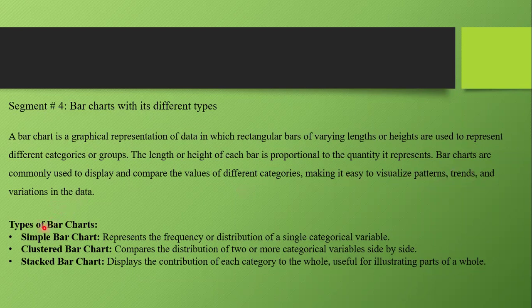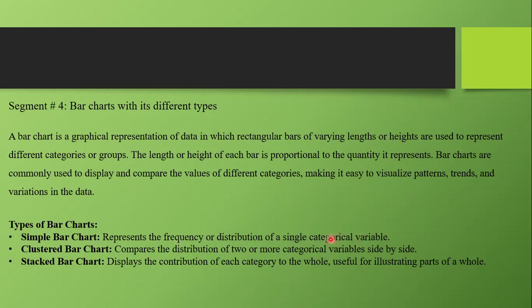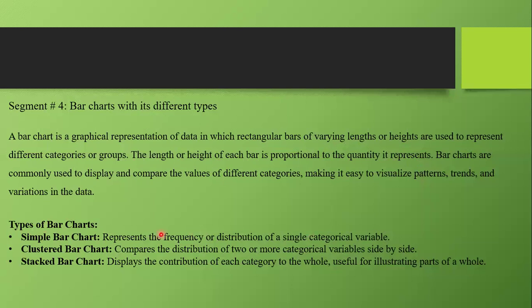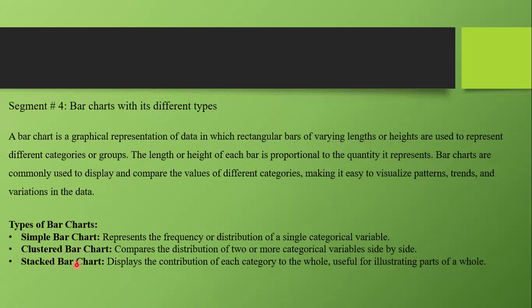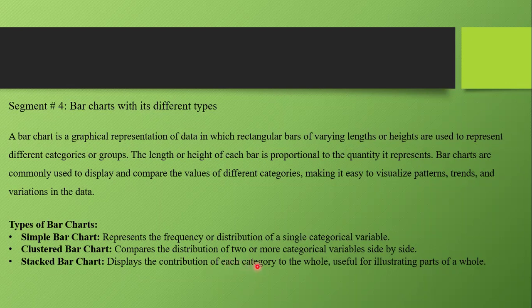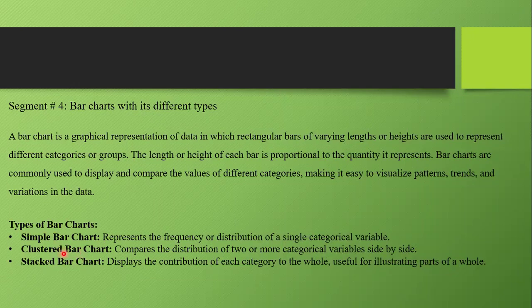There are three types of bar charts. Simple bar charts represent the frequency or distribution of a single categorical variable. If we have multiple categories or more than one categorical variable and want to compare them, we can use stacked bar charts. Clustered bar charts compare the distribution of two or more categorical variables side by side.